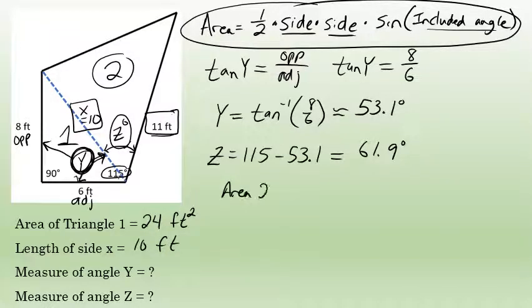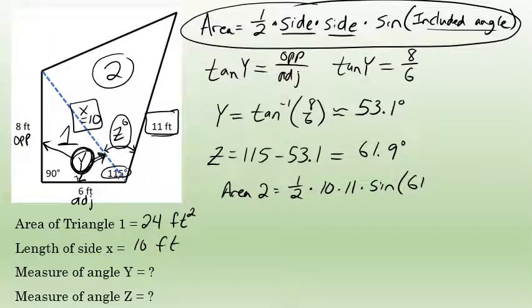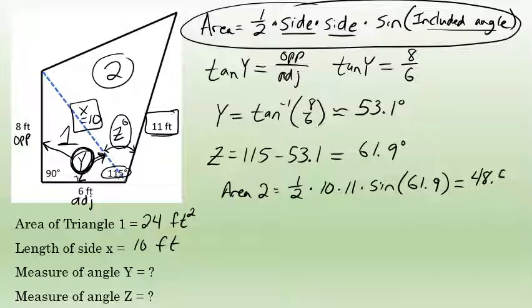The area of triangle 2 is equal to one-half times the side 10, times the second side 11, times the sine of the included angle z, which has a measure of approximately 61.9 degrees. So it's one-half times 10 times 11 times the sine of 61.9. This is irrational, so I'll round to the nearest tenth — the area of triangle 2 is approximately 48.5 square feet.